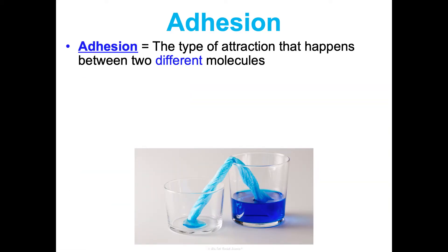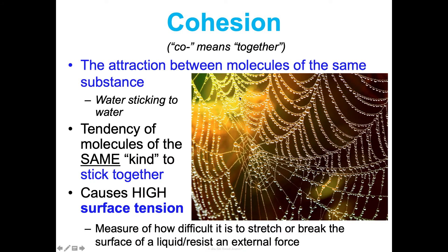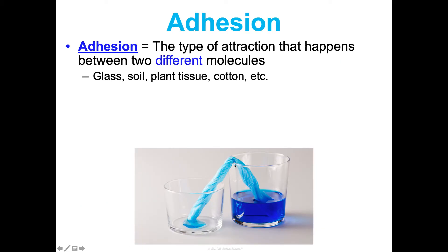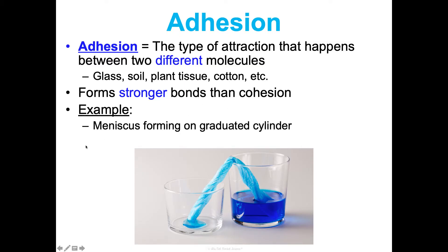Adhesion is a type of attraction that happens between two different molecules. So, water sticking to other things, like glass or soil. In this picture, there's some water molecules sticking to each other, but they're also sticking to the spider web. So, that's also adhesion. It's a stronger bond than cohesion. One example is in a graduated cylinder, like we measured with in our lab stations for measurement. There's the meniscus, which is the curve at the top. The water is sticking to the sides of the graduated cylinder, and that's what gives it that curve. Here in this picture, we see that water moves up the dry paper towel. It's able to kind of be pulled upward because of that attraction between the two different molecules.